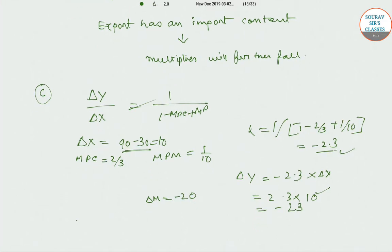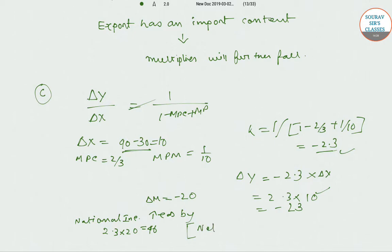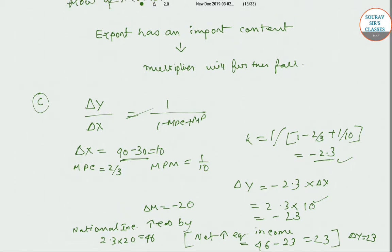National income changes: for the export change ΔY = −23, and the import fall effect gives 2.3 × 20 = 46. The net equilibrium change in national income is 46 − 23 = 23. Therefore ΔY = 23.